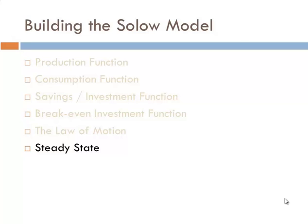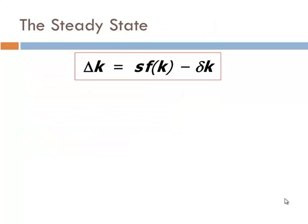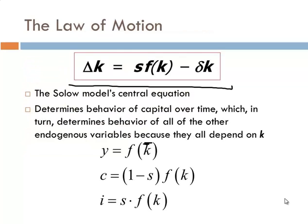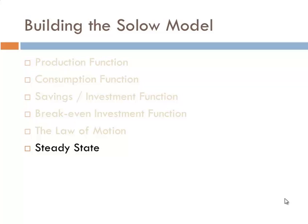The final piece is the steady state. When do we reach a long-run equilibrium? Output per worker settles down and becomes constant, consumption per worker becomes constant, and investment per worker becomes constant. That happens when delta k equals 0. If k is constant, then y is constant, c is constant, and i is constant. The place where the change in k is 0 is the steady state or long-run equilibrium.